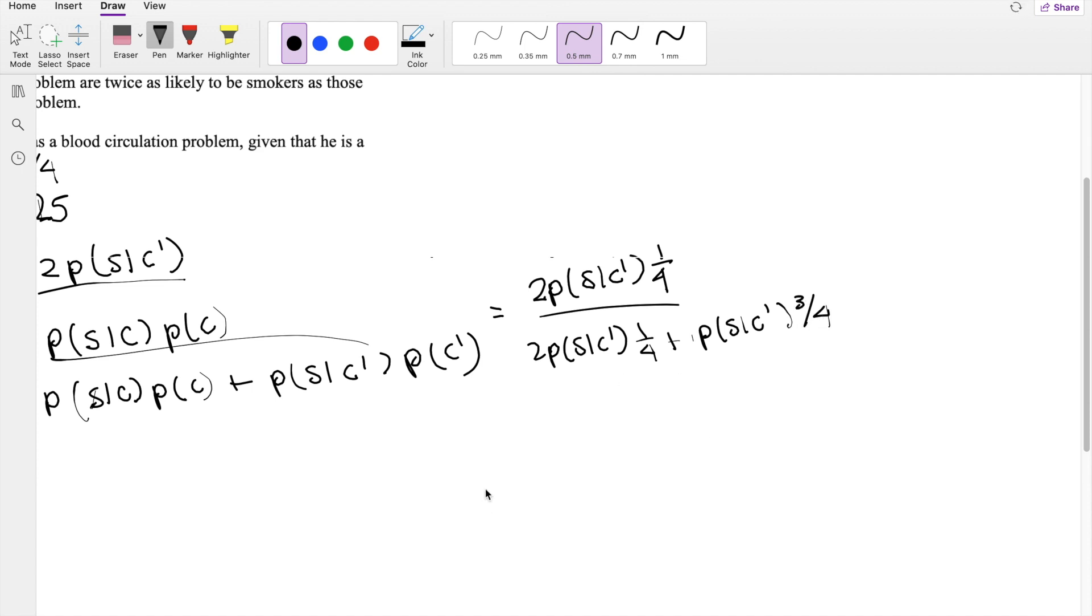So we can actually factor out the probability of S given not C out from both sides, numerator and denominator. So this becomes 1. And when you factor it out, what's left is 2 times 1 fourth, divided by 2 times 1 fourth, plus 3 fourth.